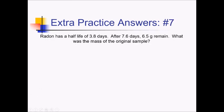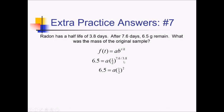On this problem, radon has a half-life of 3.8 days. After 7.6 days, 6.5 grams remain. What was the mass of the original sample? Using AB to the T over K, we solve for A. F of T is 6.5, A is unknown, B is one-half, T is 7.6 days, and K is 3.8. Since 7.6 divided by 3.8 is exactly 2, we have A times one-fourth equals 6.5. So A equals 4 times 6.5, which is 26 grams.